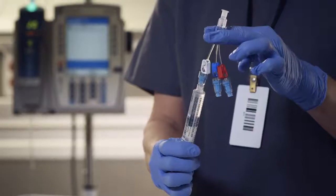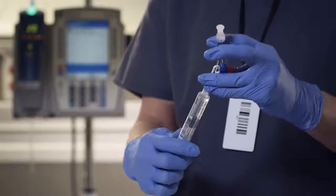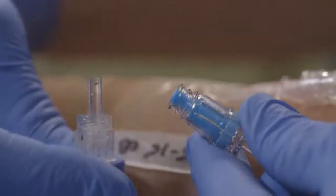For multi-fuse extension sets, remember to prime all leads of the set and invert to let air escape upward. Before attaching to the catheter, remove the vented cap.